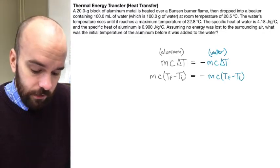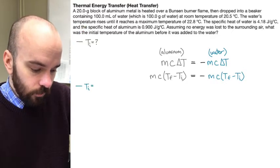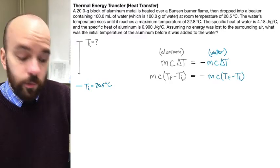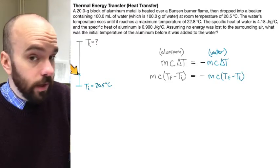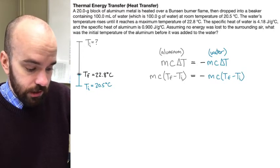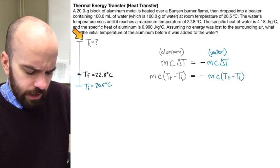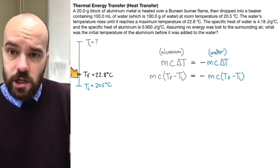Now I'm going to draw a graphic to help us visualize what's happening. Our aluminum is starting with an initial temperature that we don't know. Our water is starting at 20.5 degrees Celsius. The aluminum is going to get colder — that temperature will drop — and the water will get warmer, meeting somewhere in the middle, but not right in the middle. Notice how the final temperature is closer to the water's initial temperature than the aluminum's. The final temperature they reach is 22.8 degrees Celsius, as the problem tells us. I know the aluminum changes by a lot and the water by a little — there are two reasons for that.